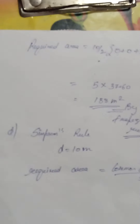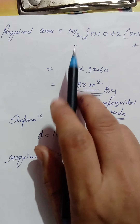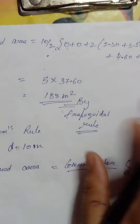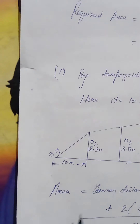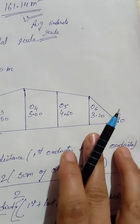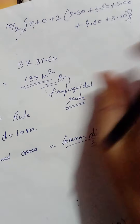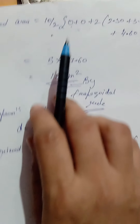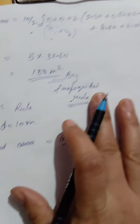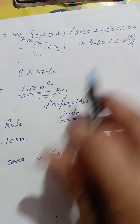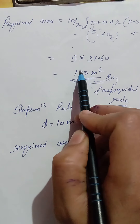The second-to-last method is the trapezoidal rule. The formula for the trapezoidal rule is: area equals common distance divided by 2, into the first plus last ordinate, plus twice the sum of all other ordinates. This can also be written as: D by 2 into (first + last + 2 times sum of all intermediate ordinates).